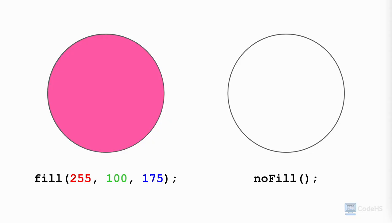The noFill function is used to remove the fill color of a shape. Let's see this in action.